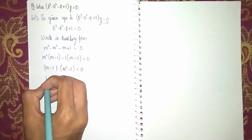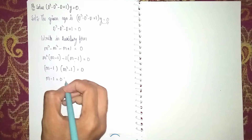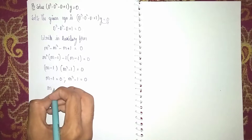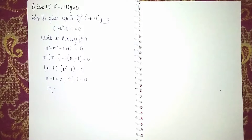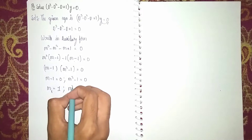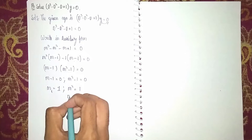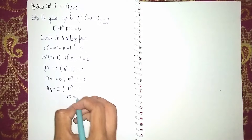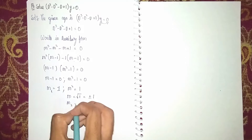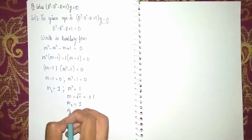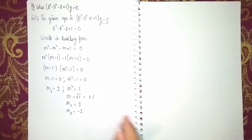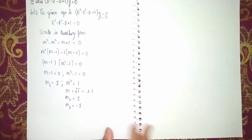Now separately equate both factors to zero: m - 1 = 0 gives m1 = 1. And m² - 1 = 0 gives m² = 1, so m = ±√1 = ±1. Therefore m2 = +1 and m3 = -1.